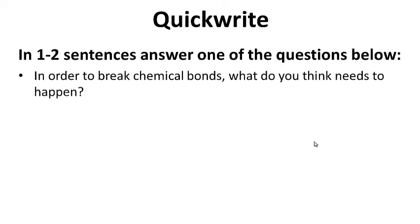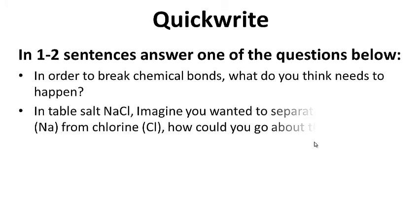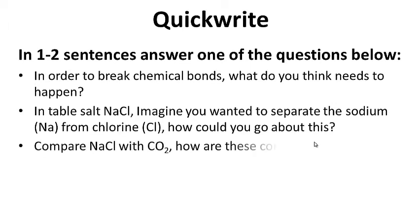For your quick write: in order to break chemical bonds, what do you think needs to happen? In table salt, sodium chloride, imagine you wanted to separate the sodium from the chlorine — how could you go about this? And then compare sodium chloride with carbon dioxide. How are these compounds different, or how are they the same?